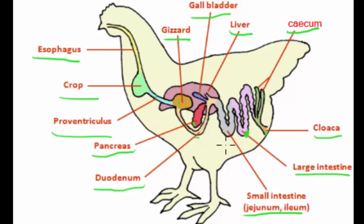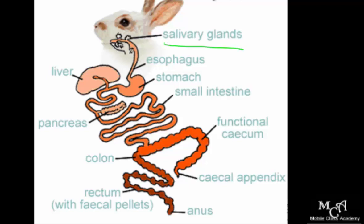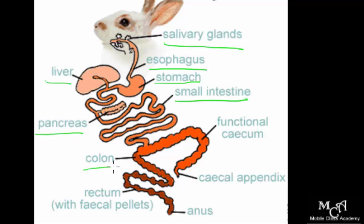We equally have the small intestine, the jejunum and the ileum. Now let's go to the alimentary canal of a rabbit. This is the salivary glands, where saliva is mixed with the food and passes on to the esophagus, then to the stomach. Once the food is acted upon with enzymes in the stomach, it passes on to the small intestine. It has the liver, the pancreas, the colon, and the rectum — where the fecal pellets are — before passing on to the anus. It has a functional cecum.